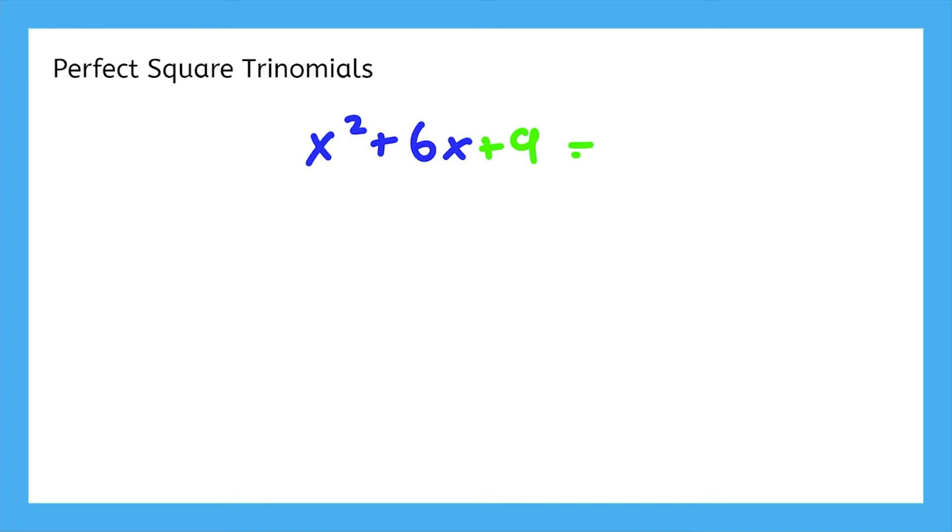In a way, we're cheating the system. If the expression doesn't factor the way we want, we can use algebra to make it do so. Let's look at how this works.